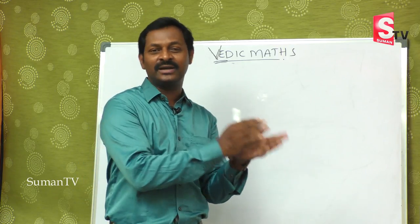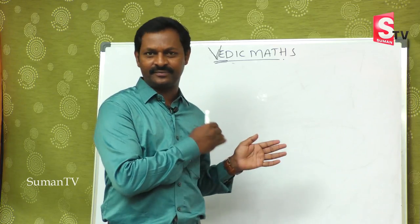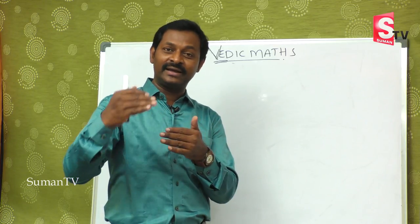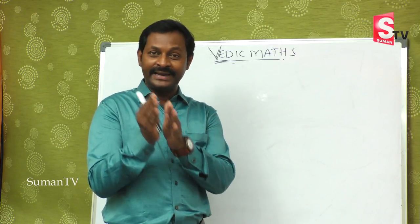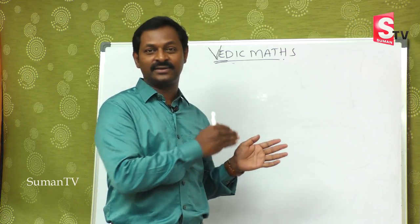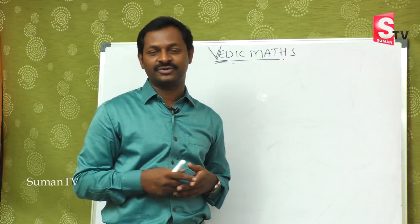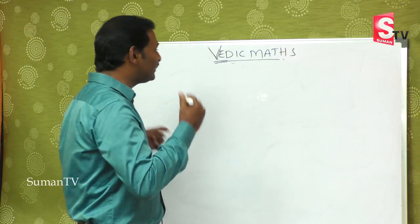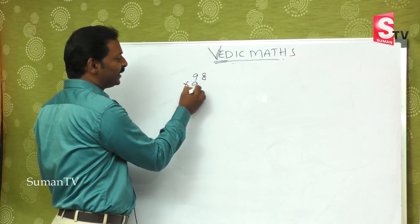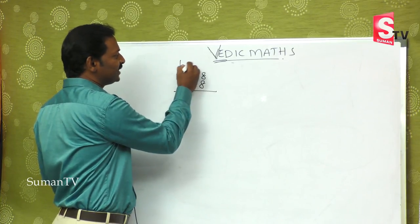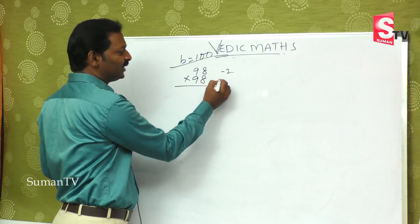We can call these base numbers. If the base number is 10, we have 5, 6, 7, 8, 9, or 11, 12, 13, 14, 15. If the base is 100, we have 90, 91, 92, 93, or 100, 110, 120, 130, or any multiple of 100. In these two methods, the two numbers can be either both below or both above the base.